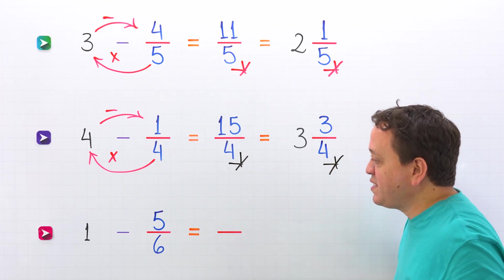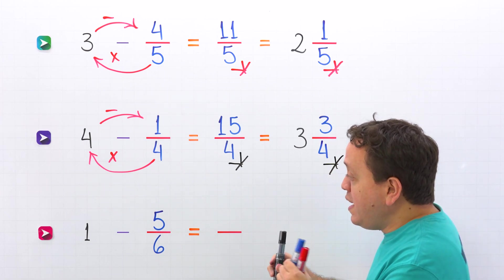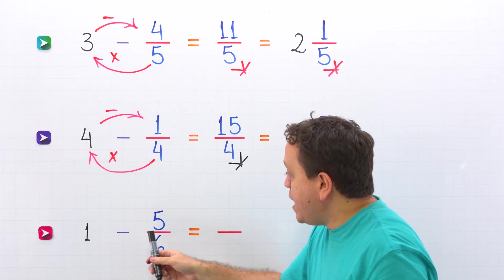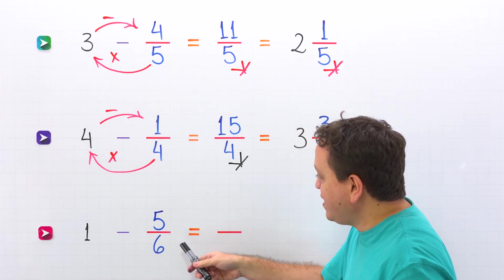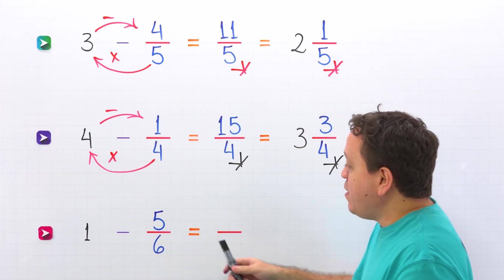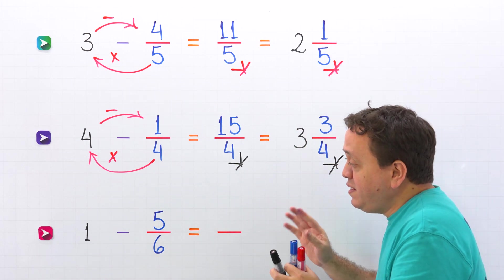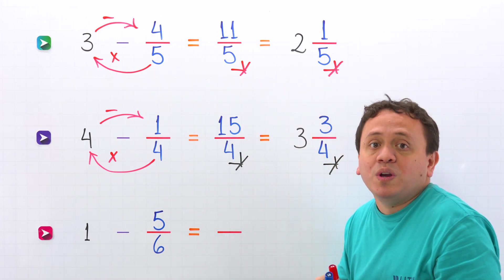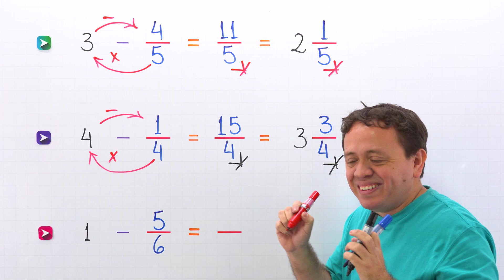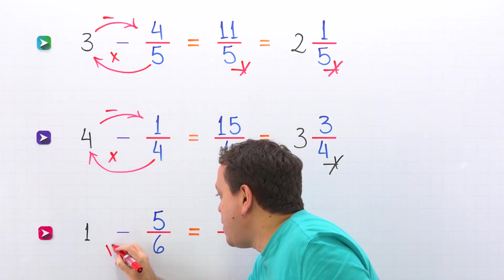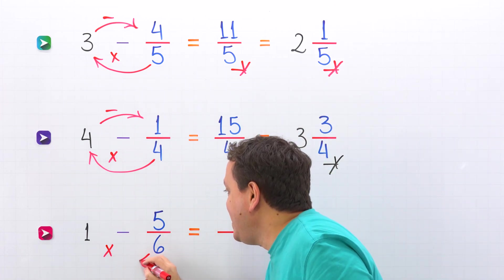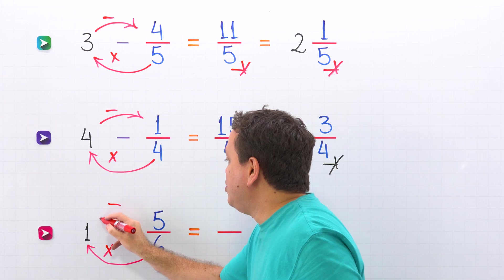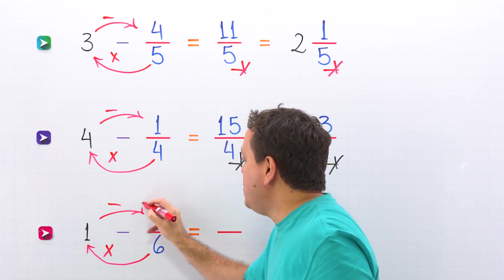Let's finish with the last example. We are going to subtract 1 minus 5 sixths. We have a whole number and a fraction. This example is different from the previous ones. However, we just need to follow the same steps: we start by multiplying the denominator by the whole number, and then we subtract the numerator.